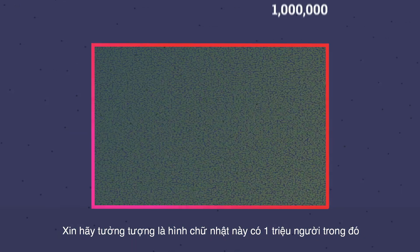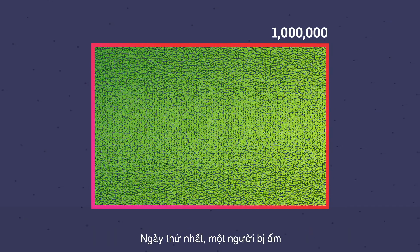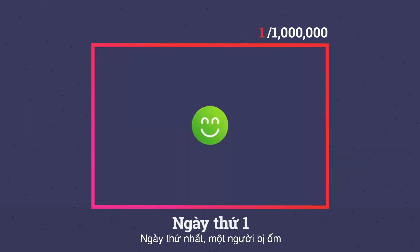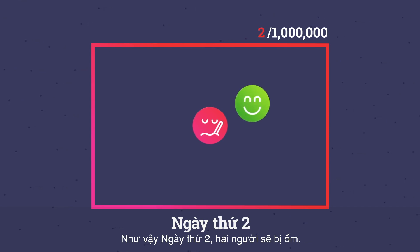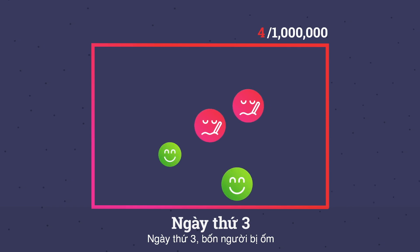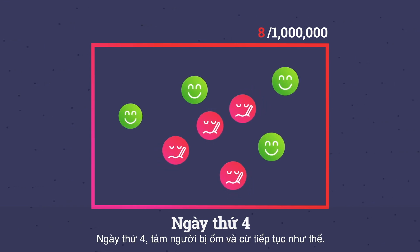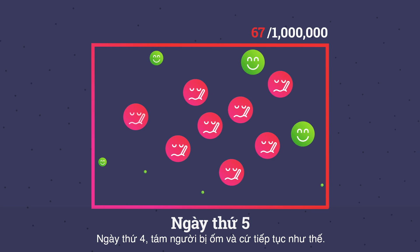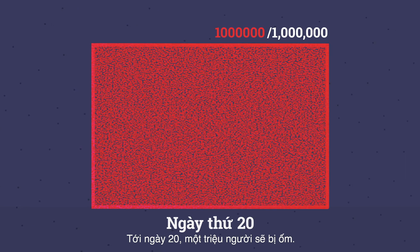Imagine this rectangle has one million people in it. On day one, one person is sick, and every sick person can spread it to one other person every single day. So on day two, two people are sick. On day three, four people are sick. On day four, eight people are sick. And so on. By day 20, one million people are sick.